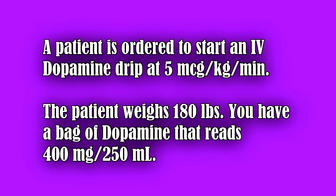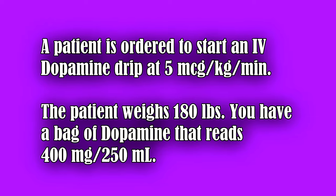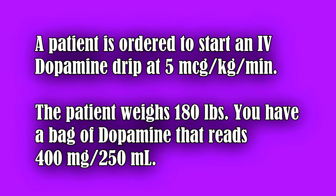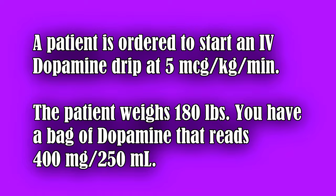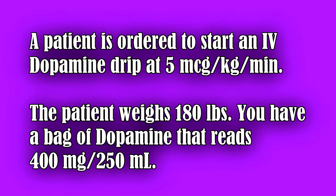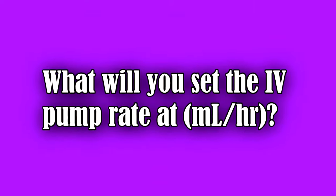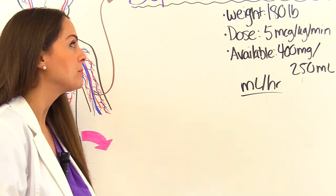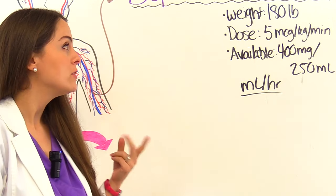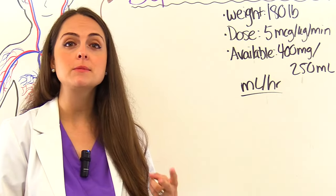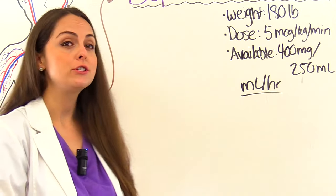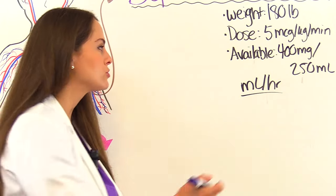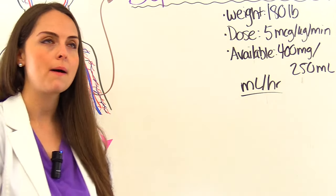Our next problem: a patient is ordered to start an IV dopamine drip at 5 micrograms per kilogram per minute. The patient weighs 180 pounds. You have a bag of dopamine that reads 400 milligrams per 250 mL. What will you set the IV pump at? We need the weight (180 lbs), the dose (5 mcg/kg/min), and what's available — a 250 mL bag containing 400 milligrams. We're trying to get to milliliters per hour.